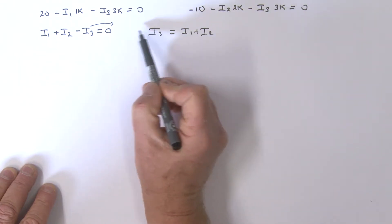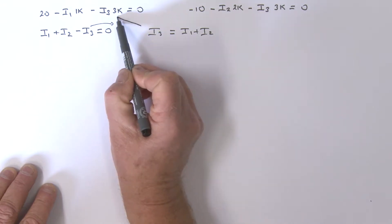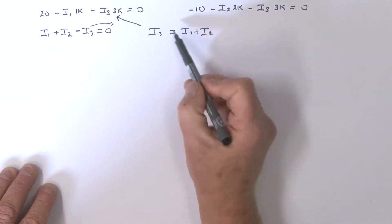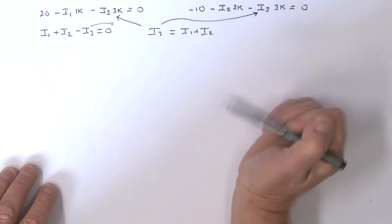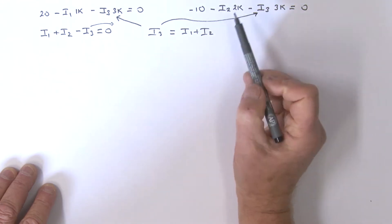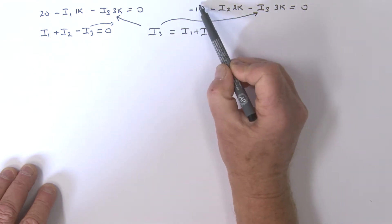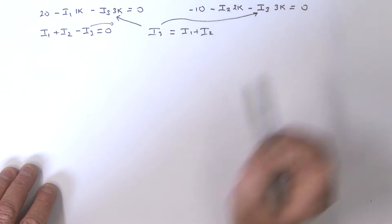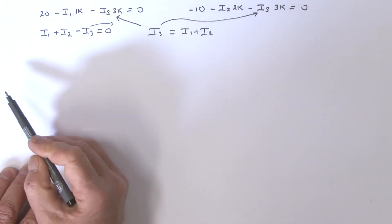What I'm going to do is put i3 into that equation, and also into that equation over there. I'll also take this minus 10 to the other side. Let's work on this one first.